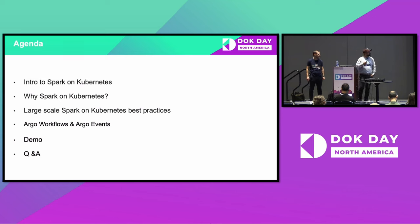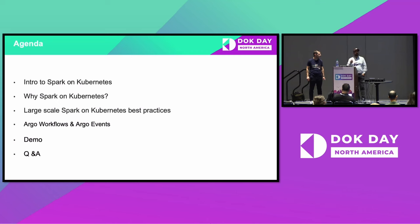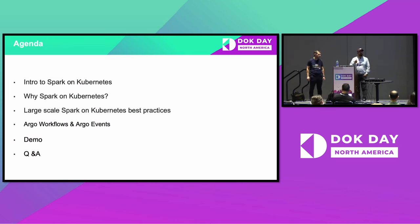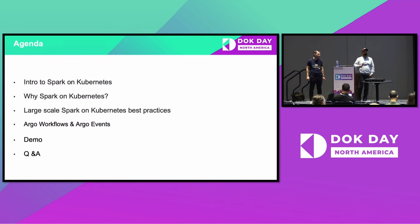We also talk about Argo Workflows and Argo Events, and some of these data pipelines that you are building. You need to ensure that these data pipelines are running on specific schedulers or workflow engines, and we will dive into Argo Workflows and Argo Events. Finally, the demo: we prepared a demo that will showcase how you can create a DAG with multiple Spark jobs and trigger those Spark jobs using both Spark Operator and Spark submit as well.